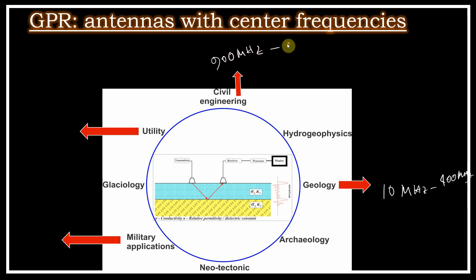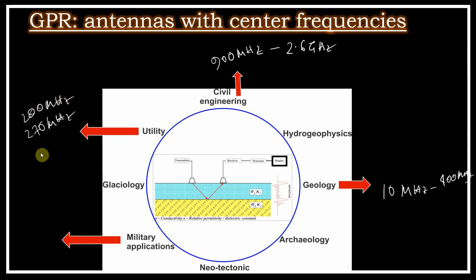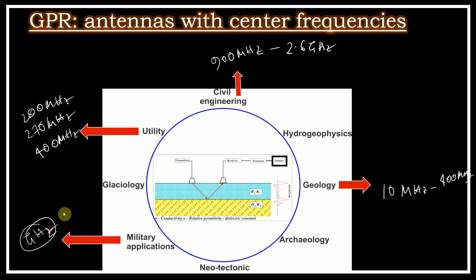For civil engineering we go up to 2.6 GHz. For utility purposes, antennas like 270 MHz, 200 MHz, or 400 MHz are used. For military applications there are special equipment types using very high frequencies in the GHz range. You have to choose based on your specific purpose.